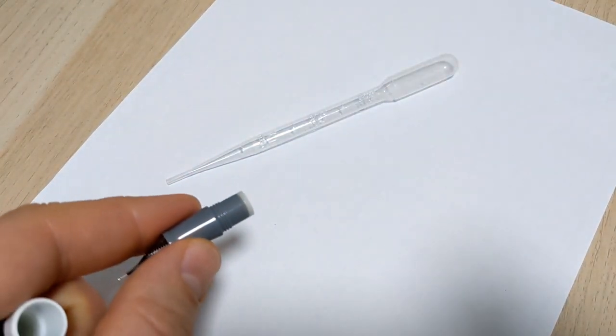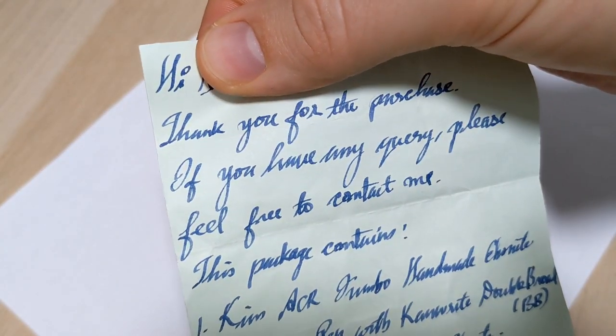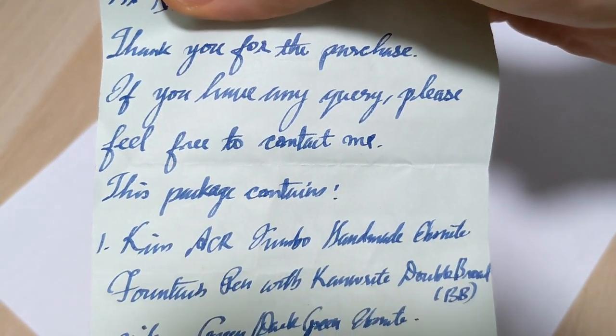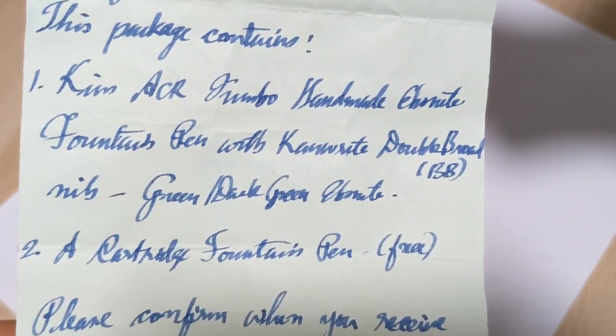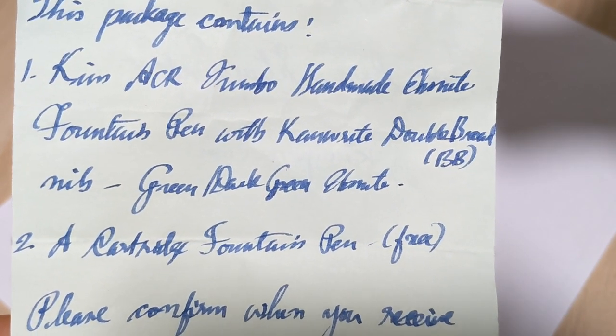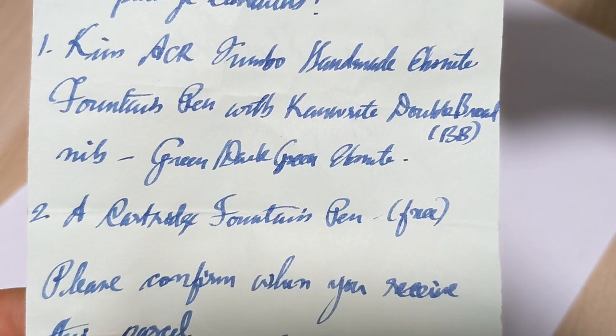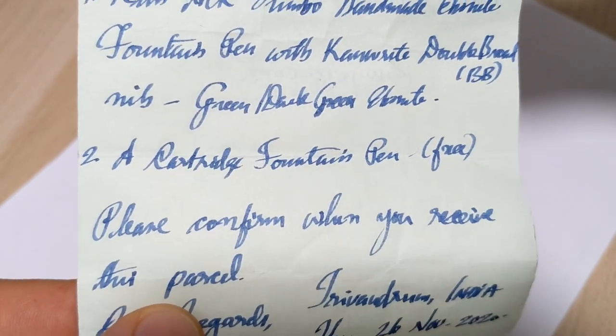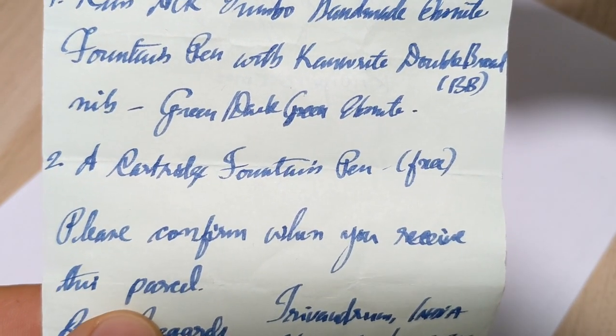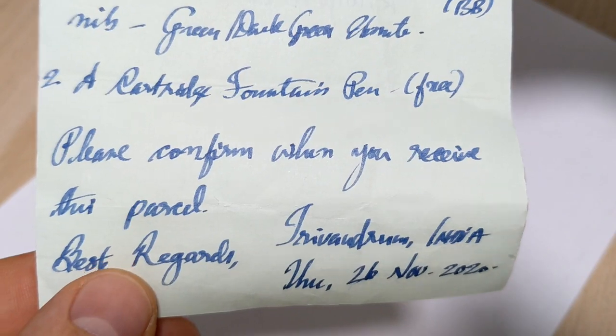It also came with a handwritten note which is always cool. It says 'Hi Doodle Bud, thank you for the purchase. If you have any query please feel free to contact me. This package contains one Kiwi ACR Jumbo handmade ebonite fountain pen with Kanwrite double broad, dark green ebonite, and a cartridge fountain pen free.'